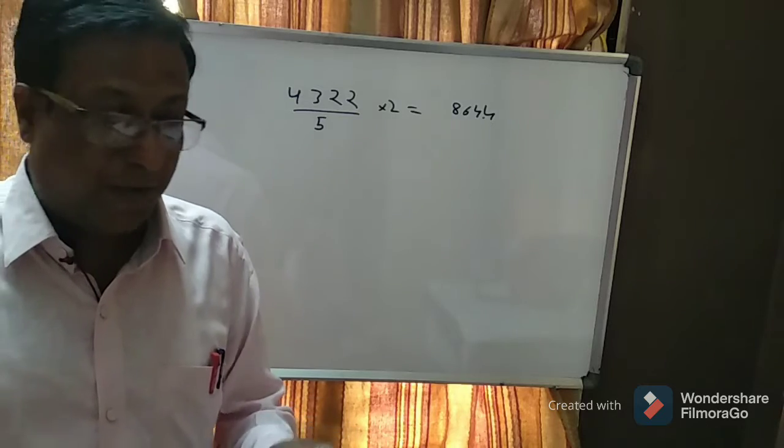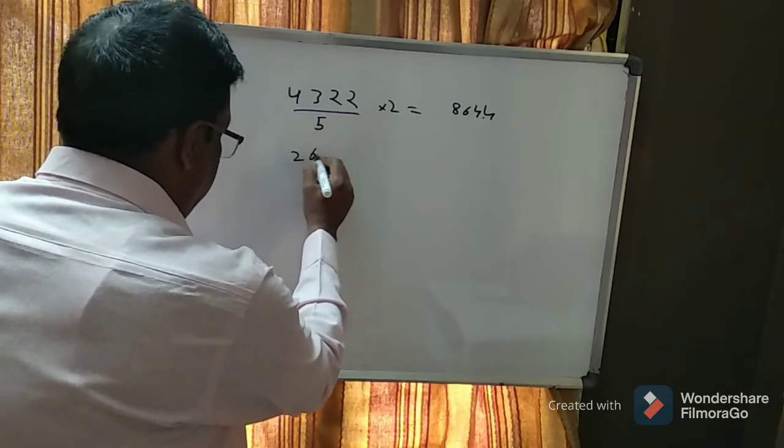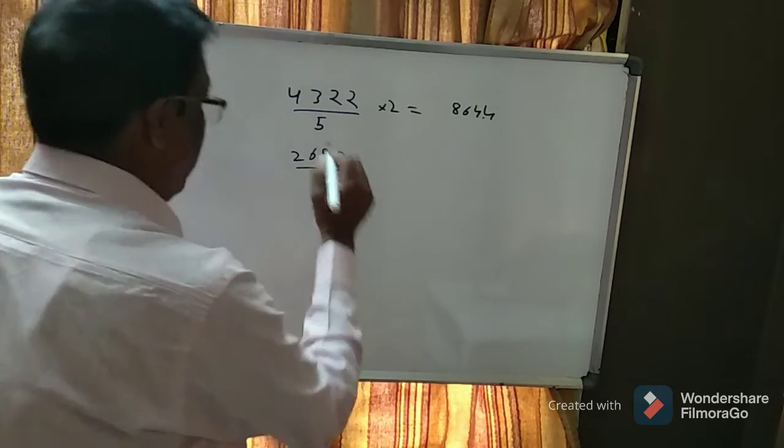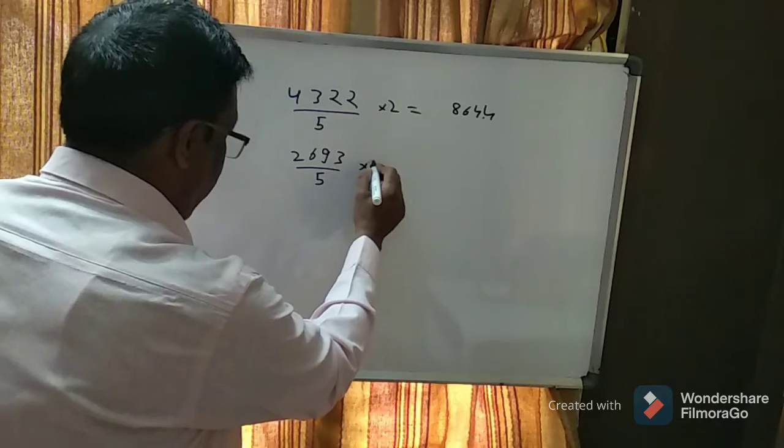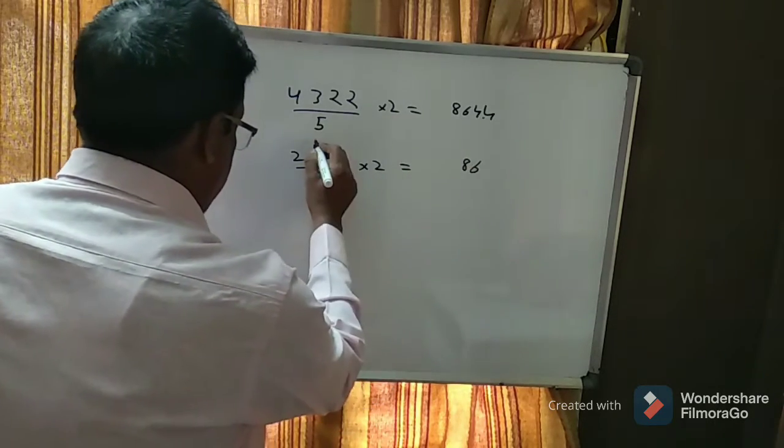Just take your calculator and check it out. Take randomly any other number like 2, 6, 9, 3, divisible by 5. Same step, multiply the given number by 2. 3 times 2 is 6, 9 times 2 is 18, carry 1.